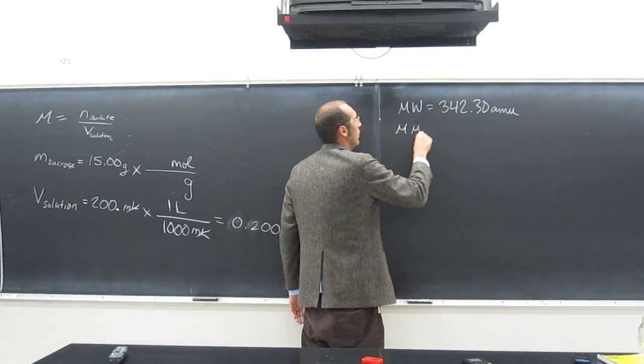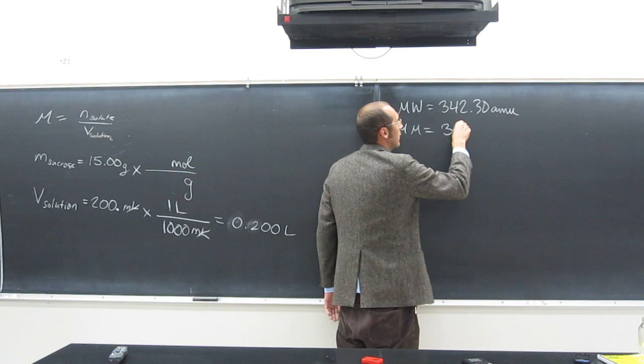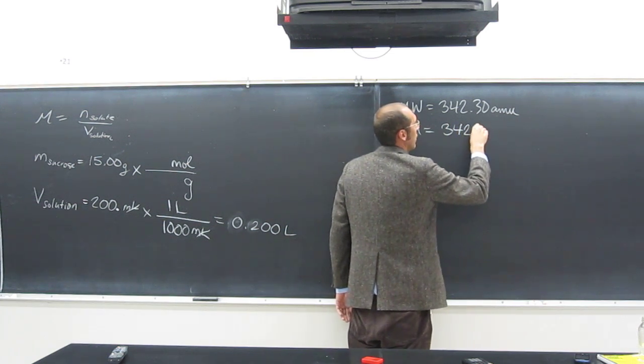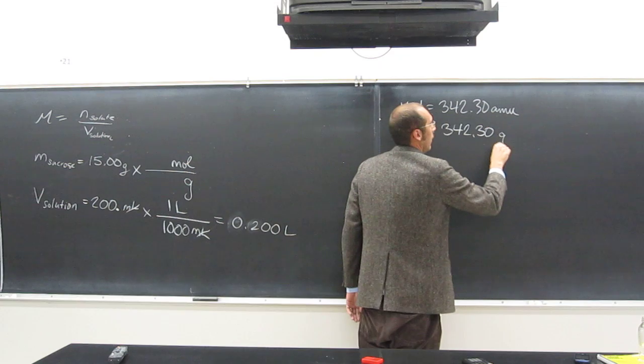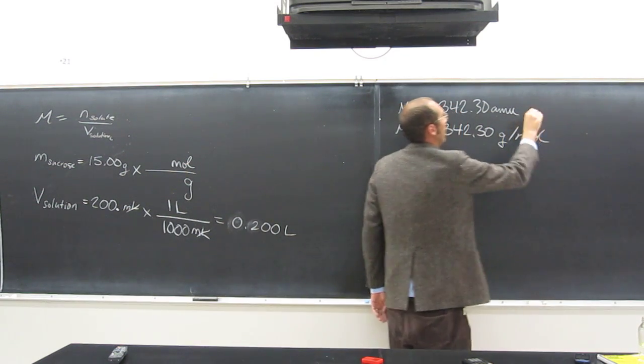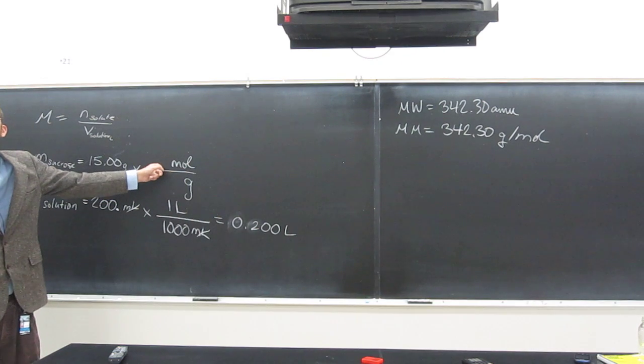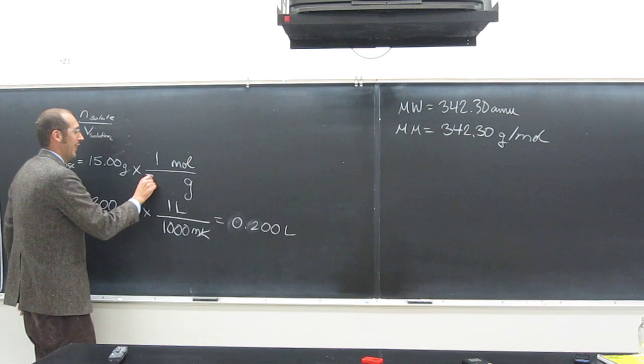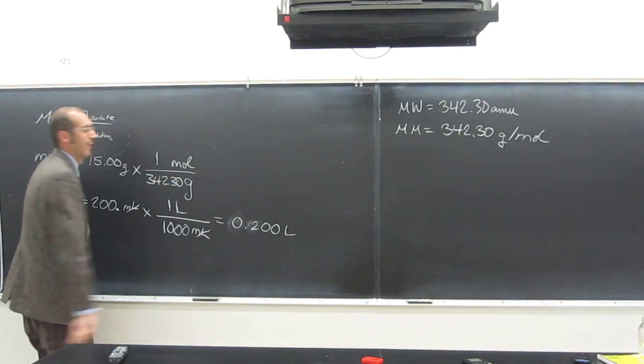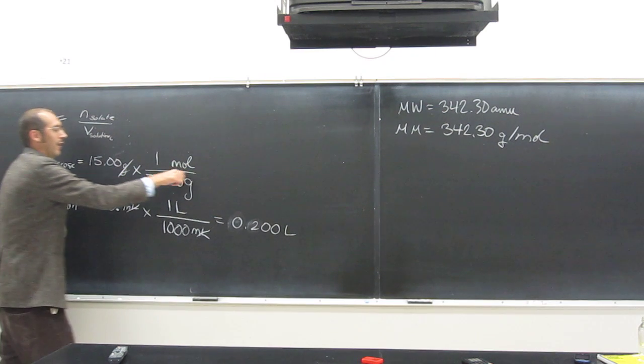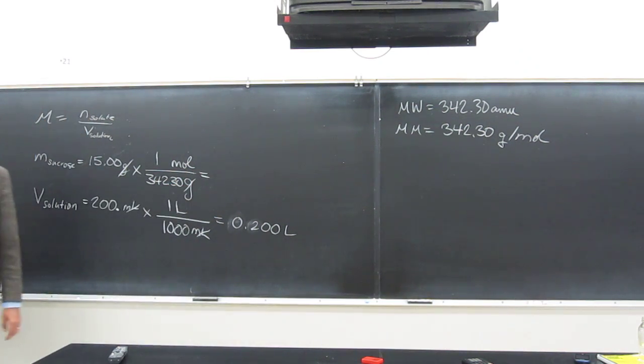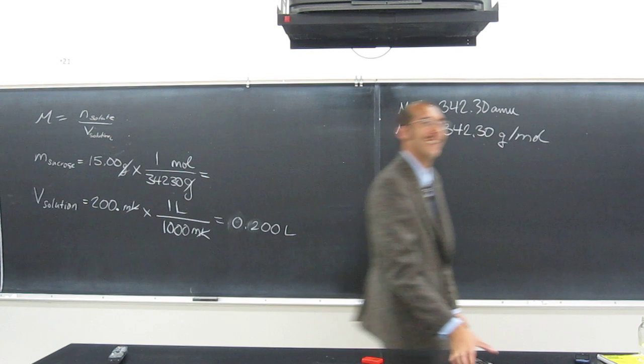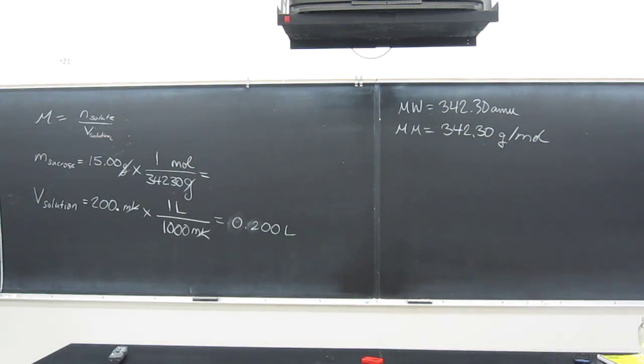But that's not the molar mass. What's the molar mass? Come on, guys. 342.30 amu. So, what do we put up here? One. And down here? 342.30. And then what do we do? Cancel. Come on, you guys. You know that. It must be too early in the morning. So, 15 divided by 342.3.